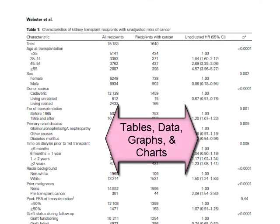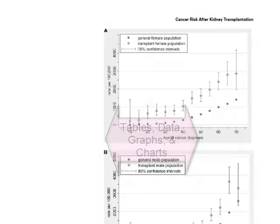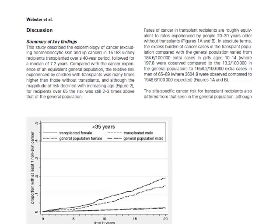Also common are tables of data, such as this one, and charts. We also have a section labeled summary of key findings. Summaries are also common in science articles.